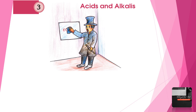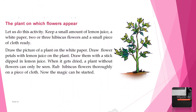Acids and Alkalis. Let us do this activity on the plant on which flowers appear. Keep a small amount of lemon juice, a white paper, two or three hibiscus flowers, and a small piece of cloth ready. Draw the picture of a plant on the white paper. Draw flower petals with lemon juice on the plant, using a stick dipped in lemon juice. When it gets dried, only the plant without flowers can be seen.